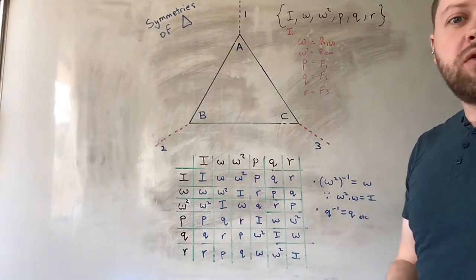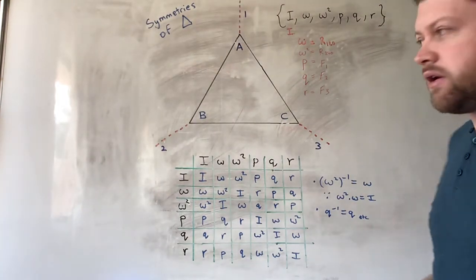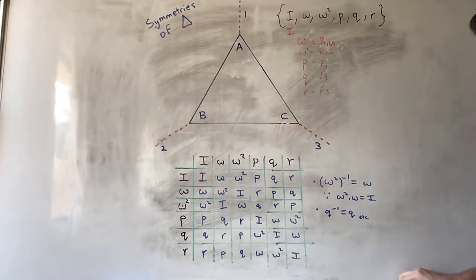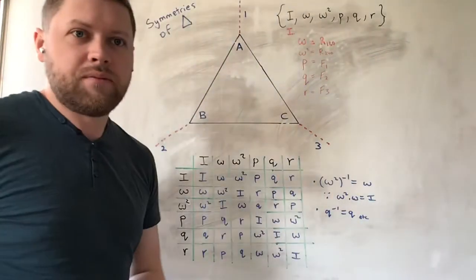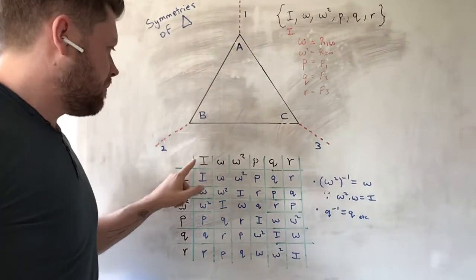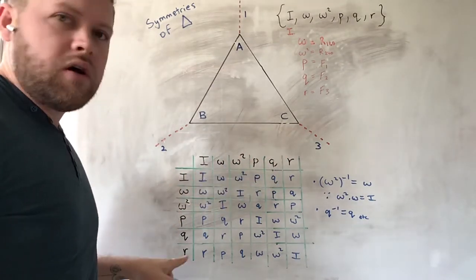Let's construct a multiplication table and see what happens. I have it done out here already, because some of these can be quite confusing. The combinations, I mean. So, here we have all our elements listed along the top and the side here.